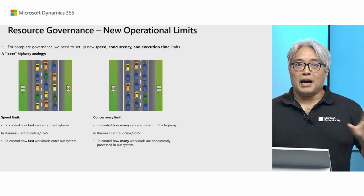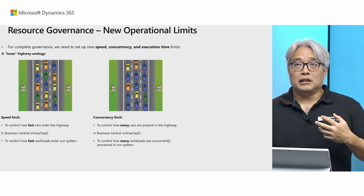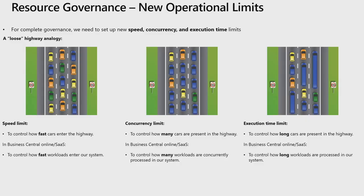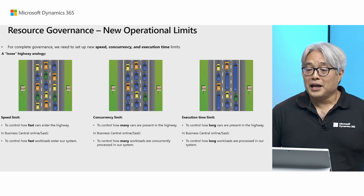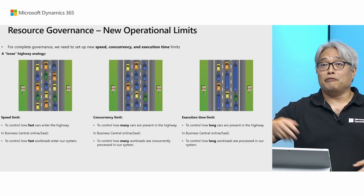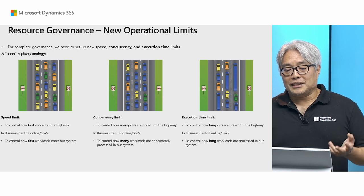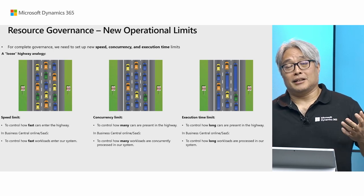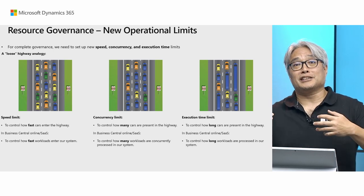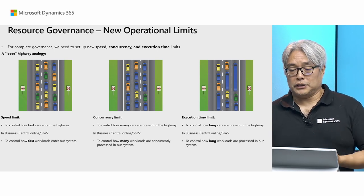We already have speed limit and concurrency limit. What we are missing and would like to introduce in the future is an execution time limit. In the highway analogy, imagine cars coming in under the speed limit but some of these cars are actually stretch limousines or long trailers — representing long-running workloads in our system. The highway capacity fills up with these long vehicles. So we need an execution time limit, in addition to speed and concurrency limits, to control how long workloads are processed in our system.